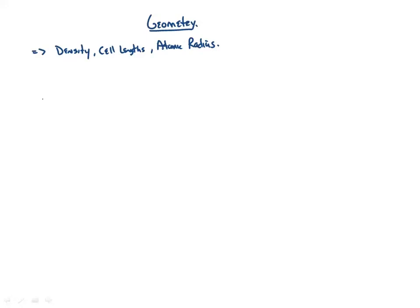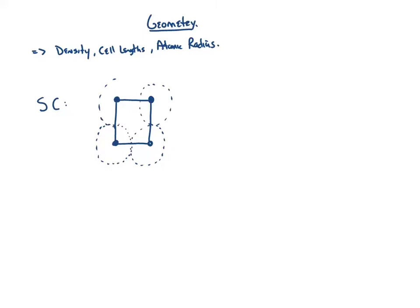For the simple cubic model, if we look at just one face, the atoms at each corner are spheres that are touching. If we define the side length as A and the radius as r, there's a very simple relationship: the side length for a simple cubic cell is A = 2r, since it's just the radius of one atom plus the radius of the adjacent atom.